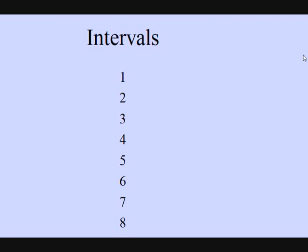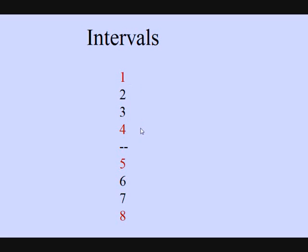To understand intervals, we're going to make a list of eight numbers. We're going to draw a line in between four and five, which divides the list into two equal parts of four numbers. We're going to pay special attention to the numbers one, four, five, and eight — those will represent the perfect intervals.